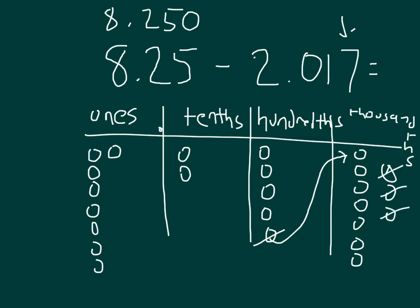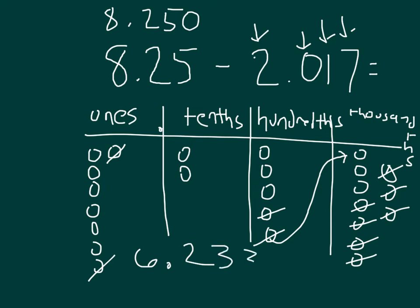Taking away 7 thousandths — 1, 2, 3, 4, 5, 6, and 7. At that point I still have 1 hundredth to take away. There are 0 hundredths to take away there, and then I take away 2 of the ones — 1 and 2. That leaves us with our answer: 1, 2, 3, 4, 5, 6 ones, a 2 in the tenths place, a 3 in the hundredths place, and a 3 in the thousandths place. So the answer is 6.233.